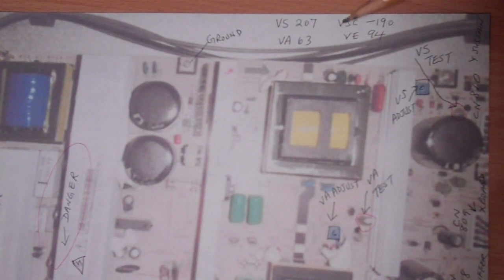On the back of your television, usually on top, there is a label that tells you the different voltages. For the signal VS, in my case it's 207, some are 200, and VA is 63. The two that we need to know are the VS voltage and VA.